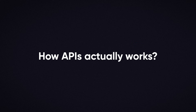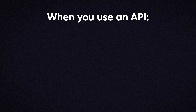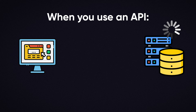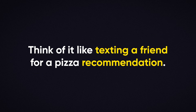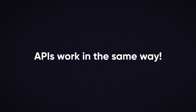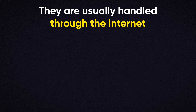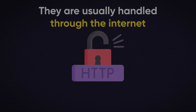Now let's take a quick look at how an API actually works. The process is pretty straightforward. When you use an API, your application sends a request to a server asking for specific information. The server then processes that request and sends back a response. Think of it like texting a friend for a pizza recommendation — they reply with a few options, and you pick one. APIs work in the same way: a request goes out and a response comes back. These requests and responses are usually handled through the internet using HTTP, just like when you load a web page.